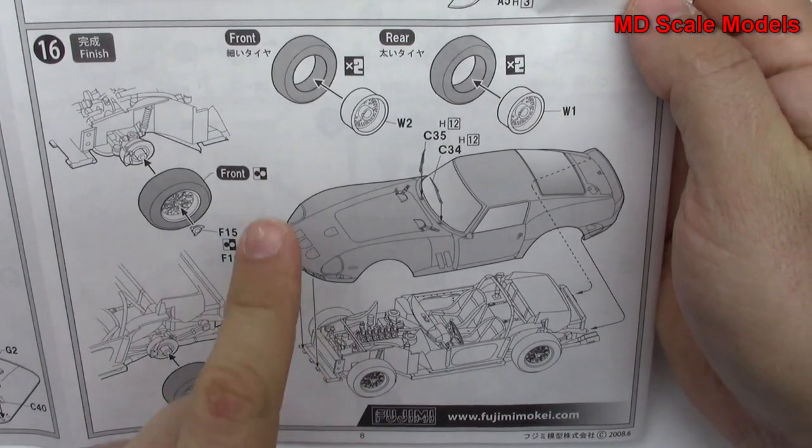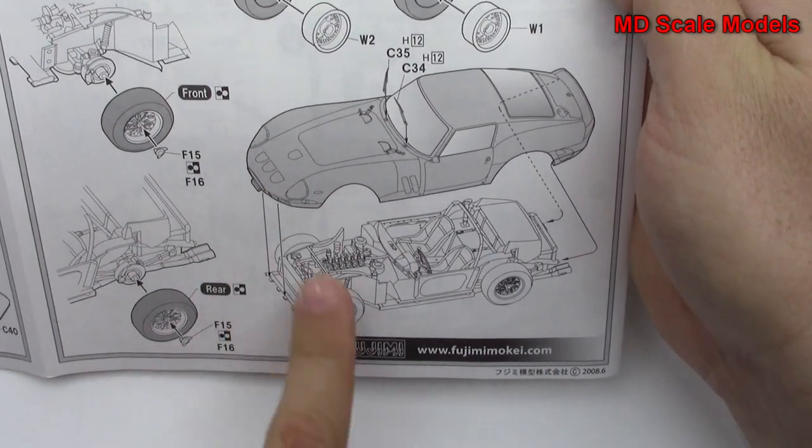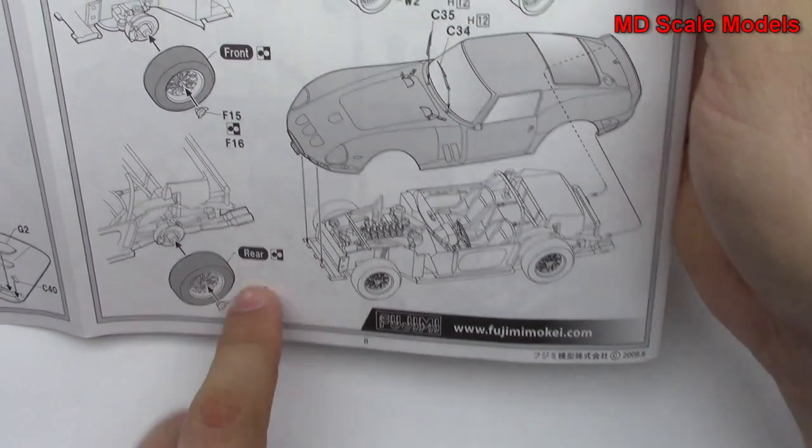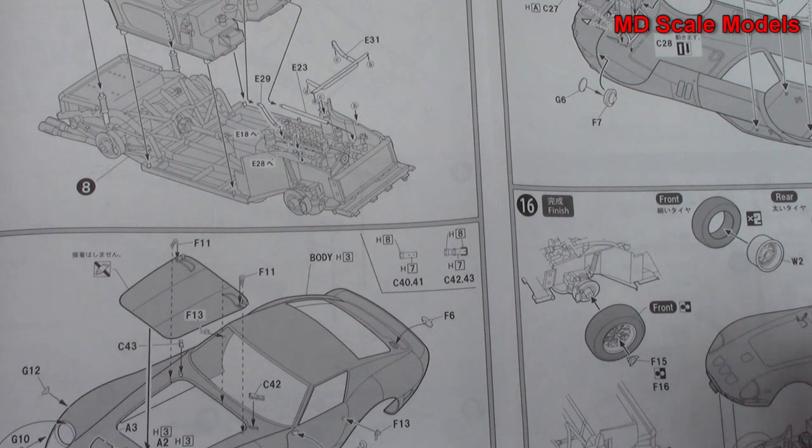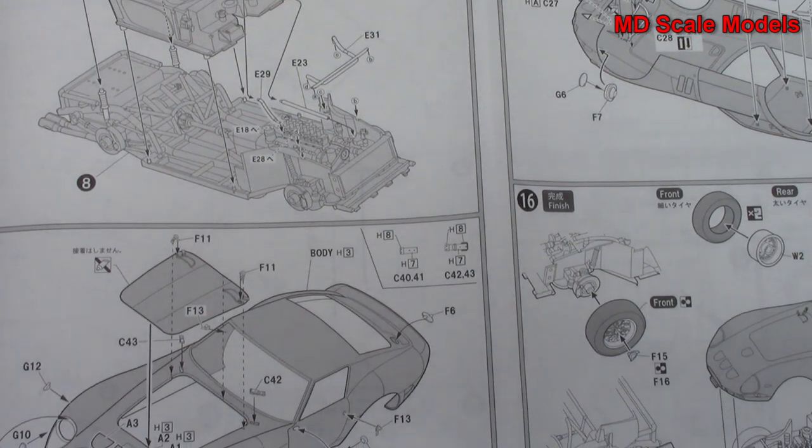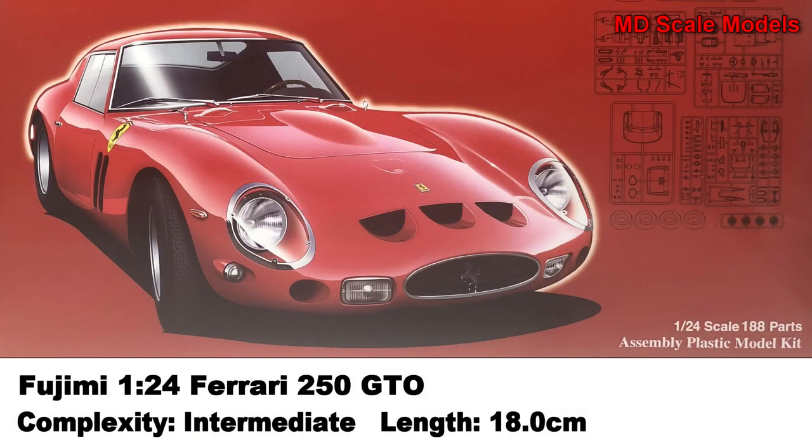We've got our wheels and tires, bodies are mounted to the chassis, and that's about it. Very nicely molded, great level of detail. Here we have our kit and the engine bay.